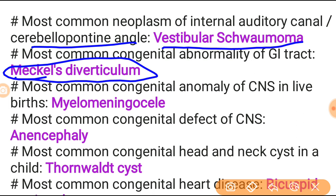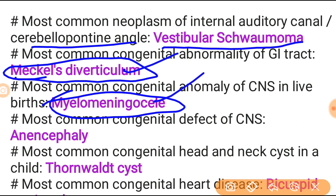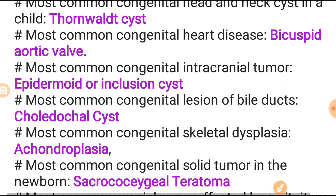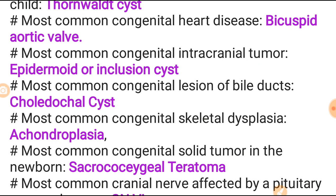Most common congenital anomaly of the CNS at birth is meningomyelocele - images and objective chart patterns are frequently asked. Most common congenital CNS defect is anencephaly - also in the very important topics list. Most common congenital heart disease in children is also in the important topics list. Most common congenital heart disease is bicuspid aortic valve.